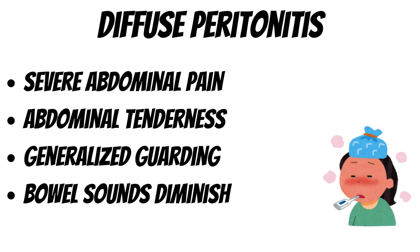In diffuse peritonitis, patients can have high grade fever, severe diffuse abdominal pain and abdominal tenderness, and generalized guarding. Unlike localized peritonitis which shows local guarding, here there is generalized guarding. Bowel sounds are diminished, which can be found on auscultation with a stethoscope, as peristalsis is reduced.